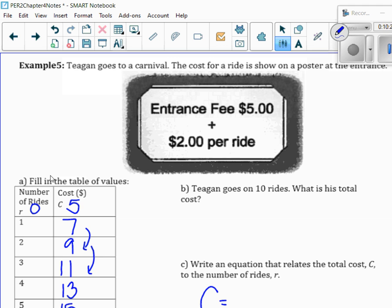So, C equals, what are we going up by? Remember, we're going up by 2. So, that means it's going to be 2 times the number of rides plus the initial cost, which is 5. So, if Tegan wants to go on 10 rides, his cost would be 2 times 10 rides plus 5, so it's going to cost him $25. And make sure you put the units.